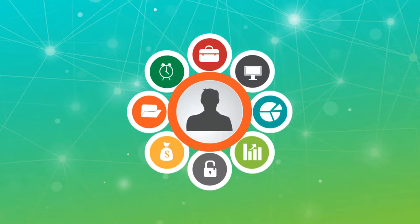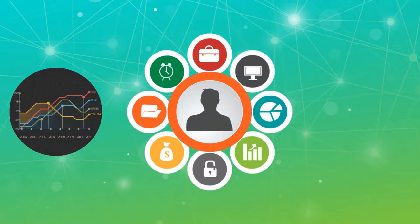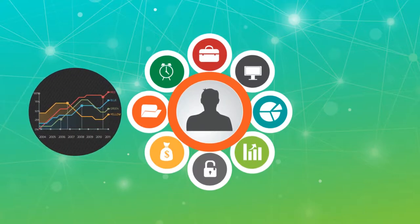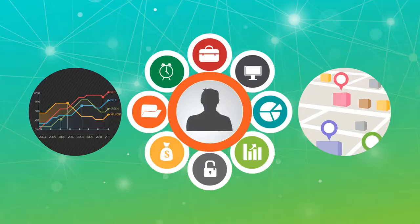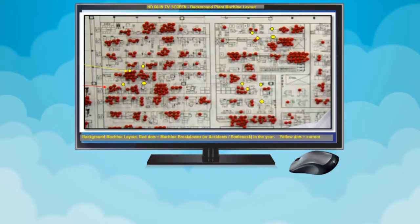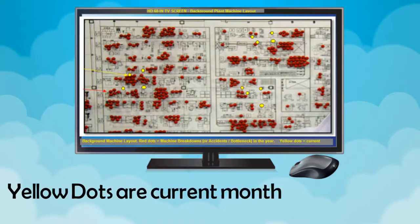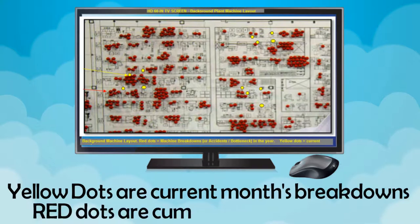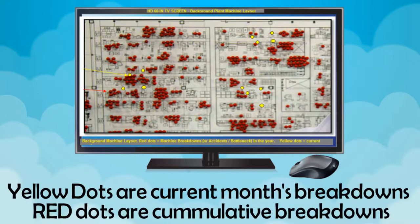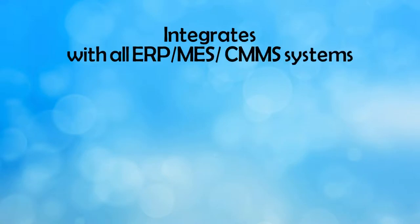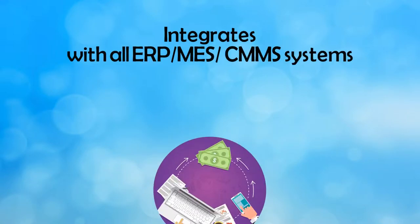Detailed tables appear at a click as needed. The example shows a digitally visualized map of machine breakdowns in the form of colored dots over the machine location. Yellow dots are the current month's breakdowns and red dots are cumulative breakdowns. LeanMap integrates with all ERPs, MES, and CMMS systems and is fully customizable.